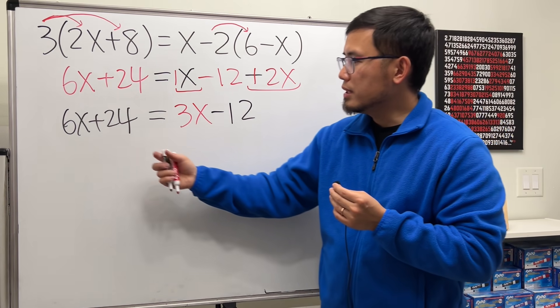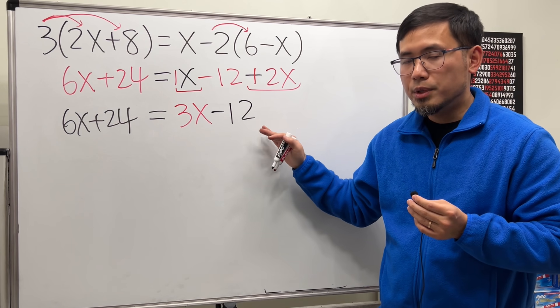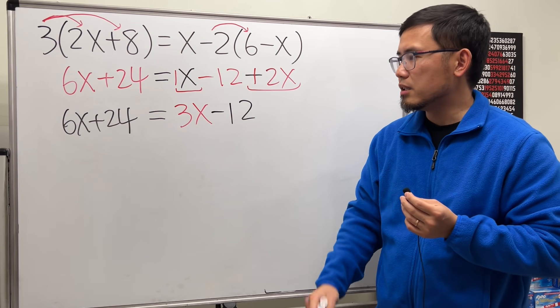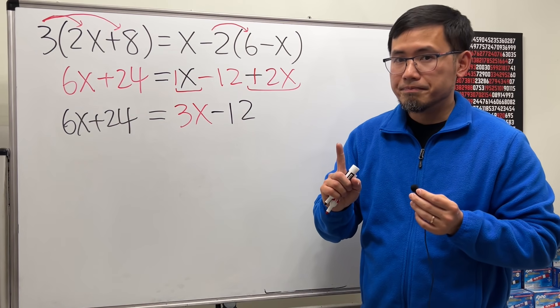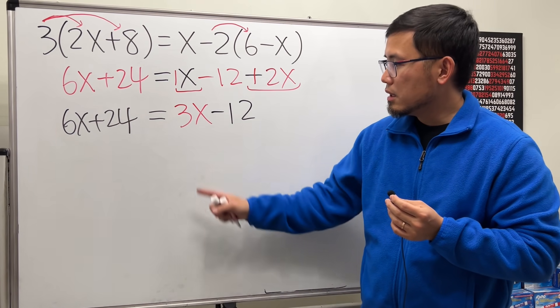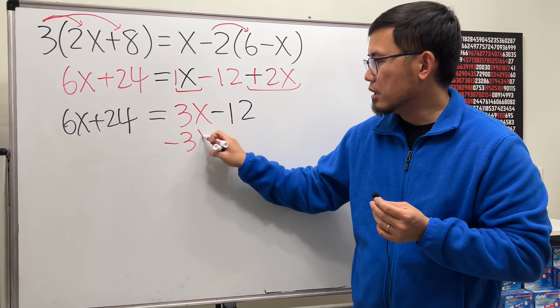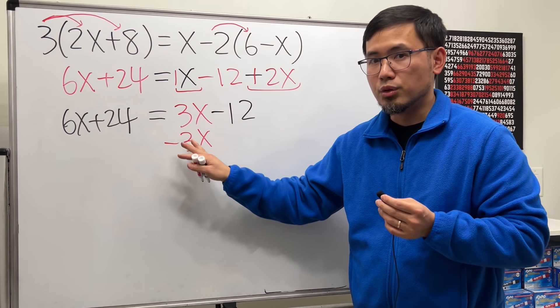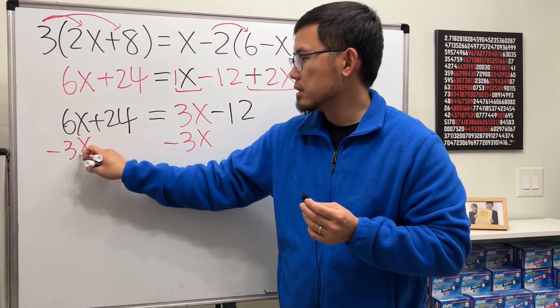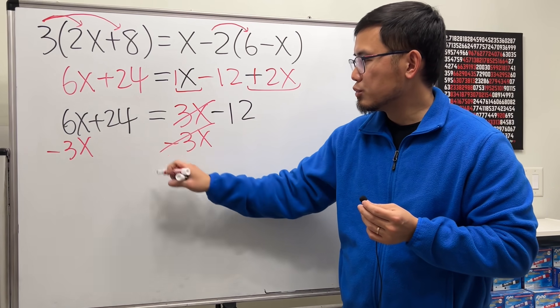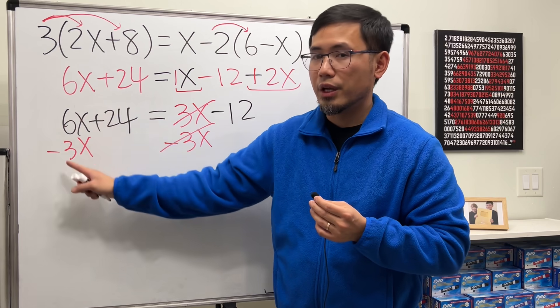Now, notice that we have x on both sides and the numbers on both sides. And this is a typical equation that you have to master. It will take about two or three steps. First, you want to put all the x on one side. So here we have the 3x. That's minus 3x here, so that way you will get 0. And we do the same thing to the other side. That's minus 3x. 3x minus 3x cancel out. So you can see that we have all the x's right here.